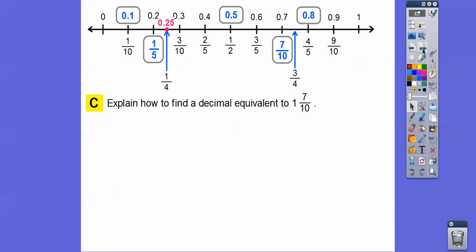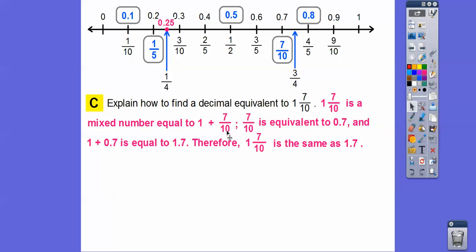Explain how to find a decimal that's equivalent to 1 and 7 tenths. This only goes to 1, but we can think of 1 and 7 tenths as 1 plus 7 tenths. And 7 tenths is 0.7, so 1 plus 0.7 equals 1.7. So 1 and 7 tenths is the same as 1.7. The decimal represents the word 'and,' so 1 and 7 tenths because 7 ends in the tenths spot.